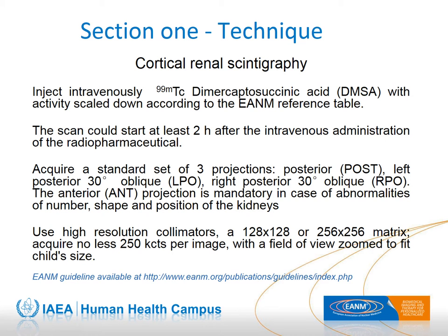Section 1: Technique. To perform a cortical renal scan, you must inject the child with technetium-99m labeled with dimercaptosuccinic acid, or DMSA. This radiopharmaceutical is taken up by the cells of the proximal convoluted tubule either through the vascular pole or the urine pole. About 50% of the injected activity is excreted through urine in the first few hours, so diapers or other urine collecting tools must be discarded according to national regulation.